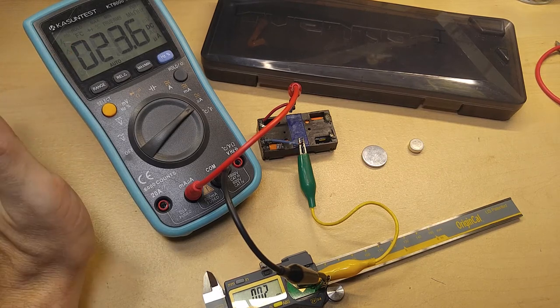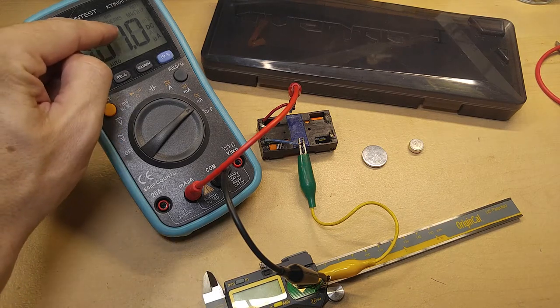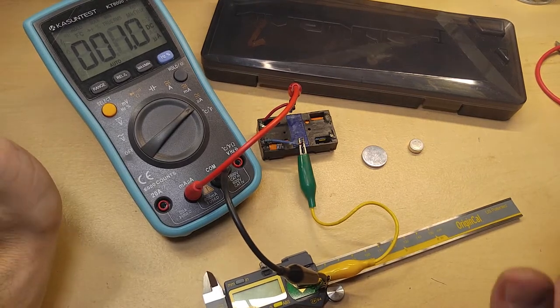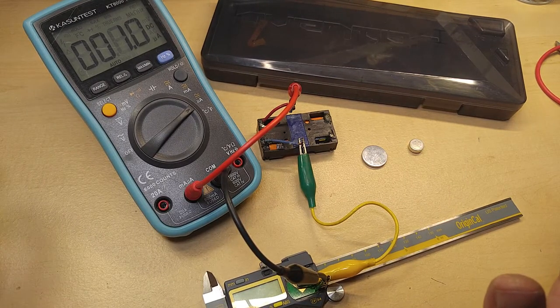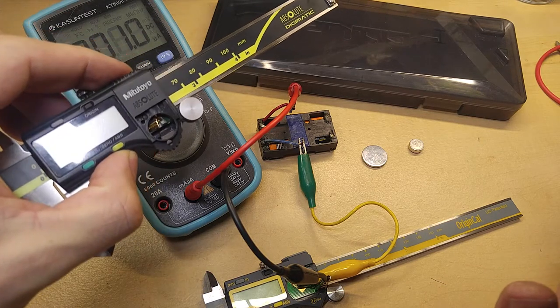Alright so we're on now and on we are drawing 23.6 microamps. So that's substantially more than the Mitutoyo but if we turn it off here we're only drawing 1 microamp. 1 microamp at 3 volts is about 3 microwatts compared to the like 4.5 microwatts that the Mitutoyo was using.